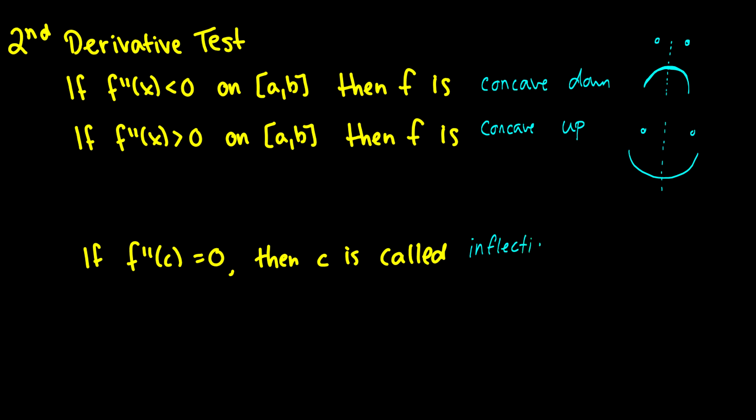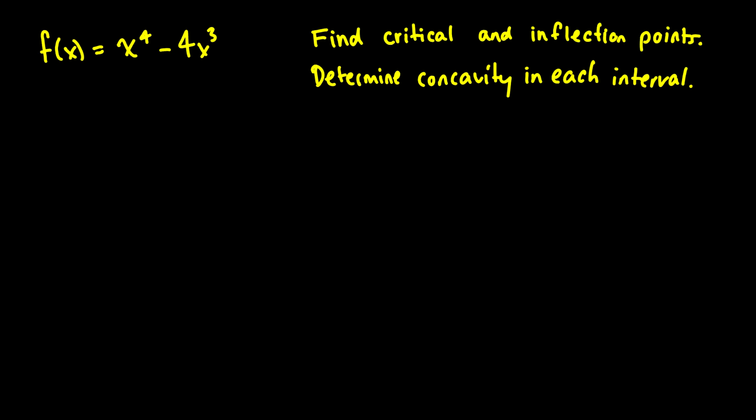You might remember that if f prime of c is equal to zero, that's called a critical point. Now we have one step further with the second derivative, and that gives us an inflection point. So what can we do with this? We can do the same thing as before — take a function and find the critical and inflection points.